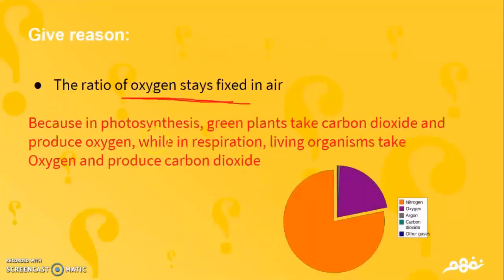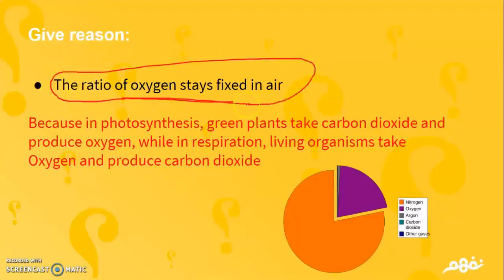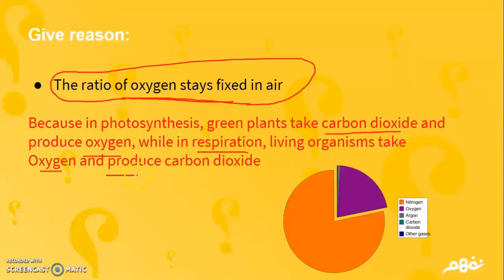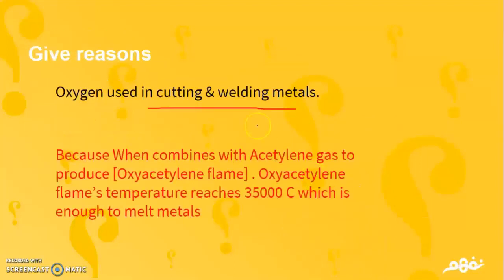Another question: give a reason why the ratio of oxygen stays fixed in the air. Because in photosynthesis, green plants take carbon dioxide and produce oxygen. On the other hand, in respiration, organisms take oxygen and produce carbon dioxide. These two processes balance each other, keeping oxygen at 21%.